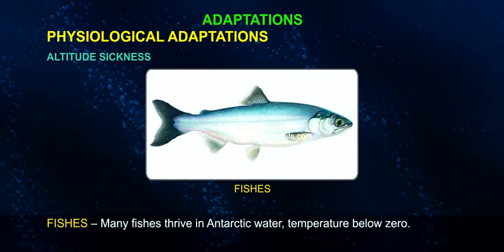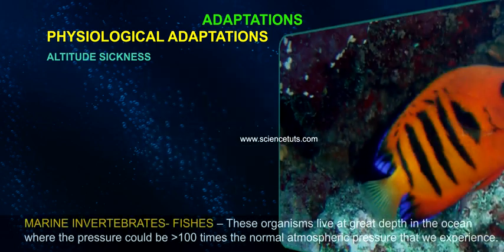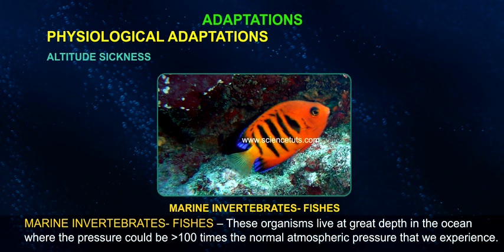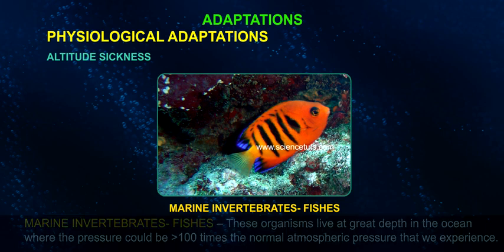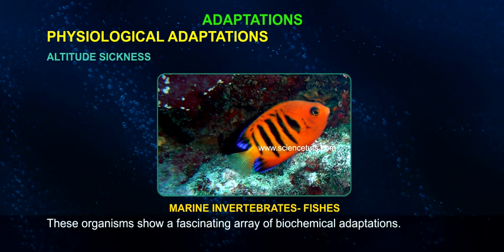Many fishes thrive in Antarctic waters at temperatures below zero. Marine invertebrates and fishes living at great depths in the ocean can withstand pressure greater than 100 times the normal atmospheric pressure that we experience. These organisms show a fascinating array of biochemical adaptations.